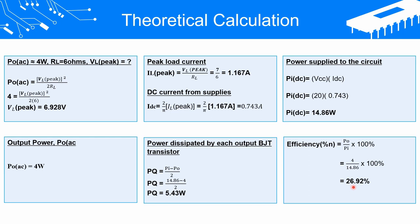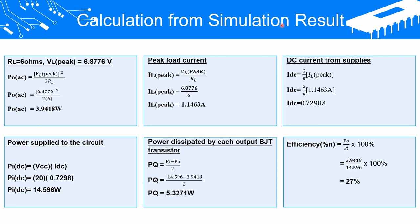Now I will explain the calculation from the simulation result. From the simulation, the output peak voltage is 6.8776 volts and the load resistance is 6 ohms. Substituting into the output power equation gives a simulated output power of 3.9418 watts. Next, the peak load current is calculated by substituting the output peak voltage and load resistance, giving 1.1463 amperes. The DC current from the supply is then calculated using the formula with the peak load current, giving 0.729 amperes.